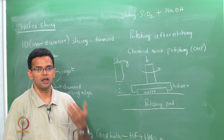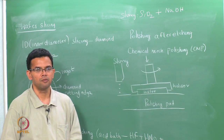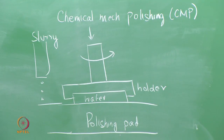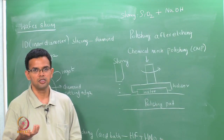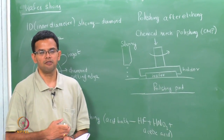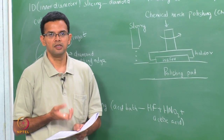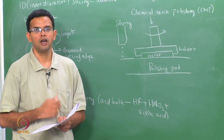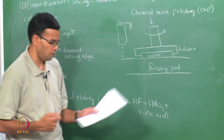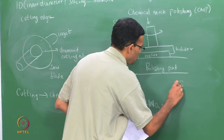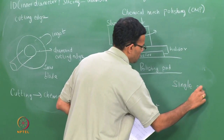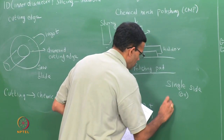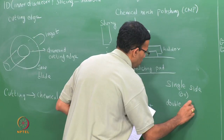So you have both a chemical component and a mechanical component — the surface of the wafer is polished. Usually polishing is done on one side, called single-side polishing; the other side of the wafer is dull. The polished side is what is used for IC fabrication. You can also have double-side polishing in which both sides of the wafer are polished — single-side polishing is most common, but double-side polished wafers are also available.